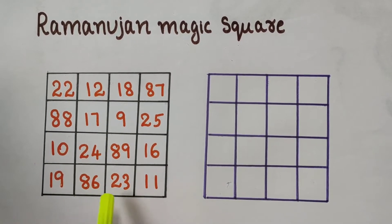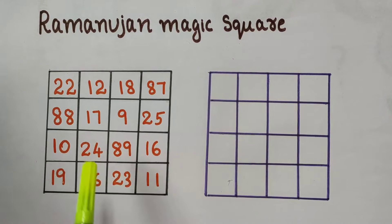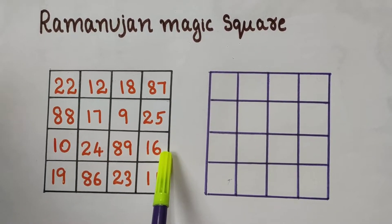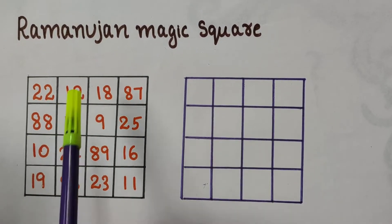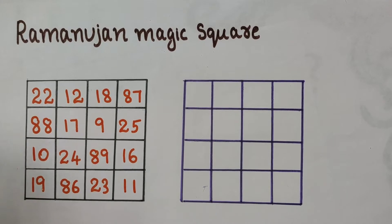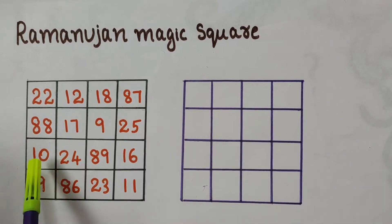The sum of numbers 12, 18, 86, 23 is 139. And the sum of numbers 88, 10, 25, 16 is 139. Sum of 12, 88, 16, 23 is 139.